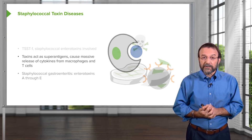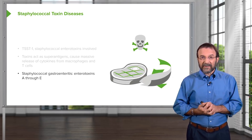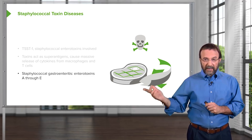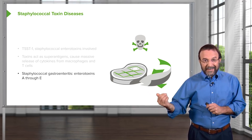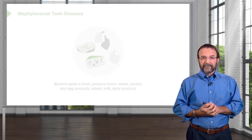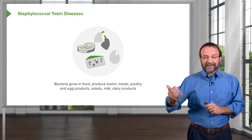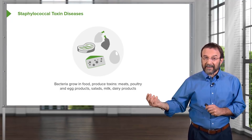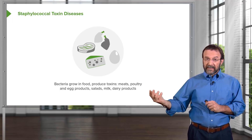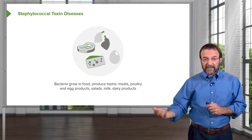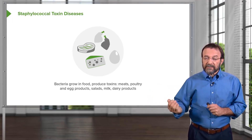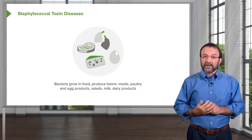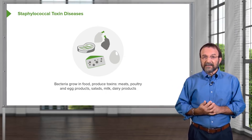Staphylococci can also cause food poisoning. They can be present in food and produce enterotoxins that are already in the food when you eat it, making you sick. You can imagine someone with Staph aureus on their unwashed hands preparing food — the bacteria contaminate the food, and if it's not kept cold and sits at room temperature, the bacteria grow and produce their toxins.